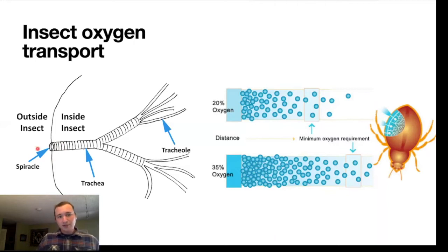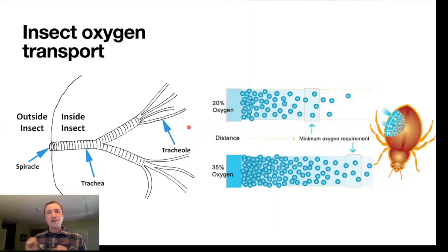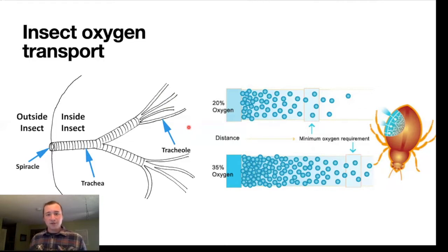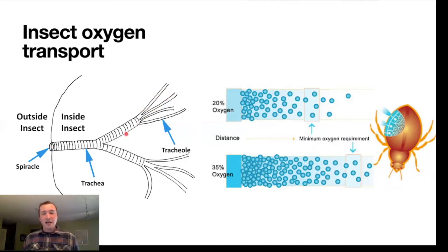Air goes into the spiracle and follows a system of branching tubes called trachea, which are very narrow air-filled tubes that come very close to the sites of aerobic respiration in insects. So air, instead of blood with red blood cells, is coming near the sites of aerobic respiration. That changes fundamentally how much oxygen can get to the cells on the insides of insects.